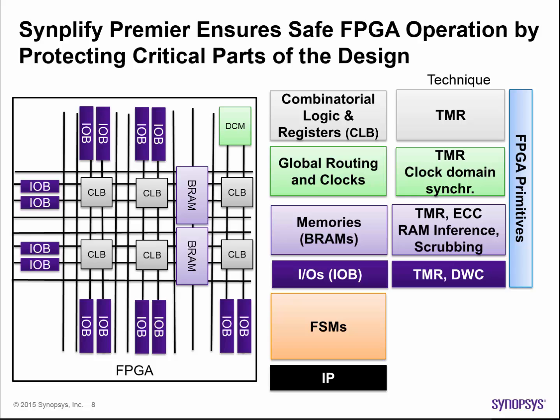Different methods and techniques can be applied to protect each of these FPGA primitives from radiation-induced errors. These techniques detect the presence of the error and automatically correct the problem in hardware. For example, we can design in redundancy and error correction via a technique known as triple modular redundancy, or TMR. Alternatively, we can detect the error using a duplicate with compare, DWC, function to trigger software-based or other error correction, such as memory scrubbing. We can even tell the software to select and use special error-correcting memories, known as ECC RAMs, in critical parts of the design.